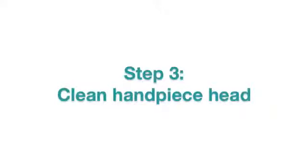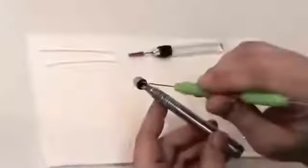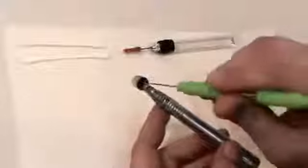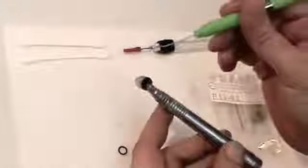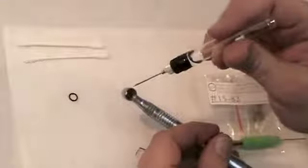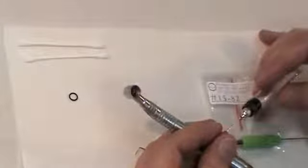Use a scaler or explorer to remove all of the old turbine components, including any shims, o-rings, washers, or bearing retainers. Once all of the old turbine components have been removed, you can use a cotton swab and handpiece lubricant to clean the handpiece head.